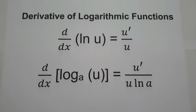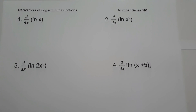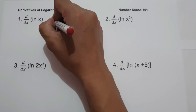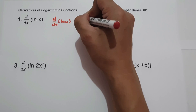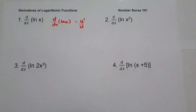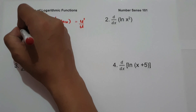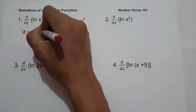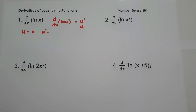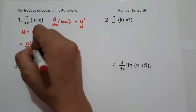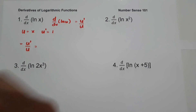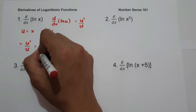Let's start with the first set of examples using the formula: derivative of ln u equals u' over u. Number one: what is the derivative of ln x? Let u = x, so u' = 1. Applying u' over u gives us 1 over x. This will be our answer.